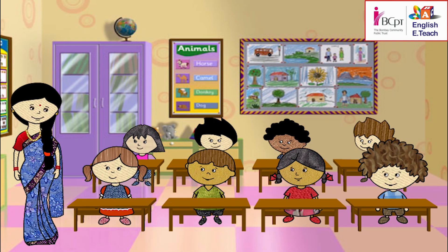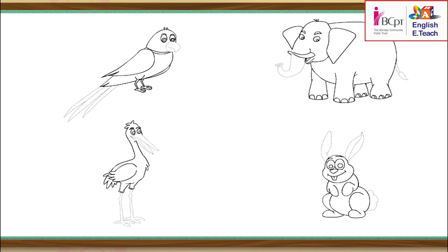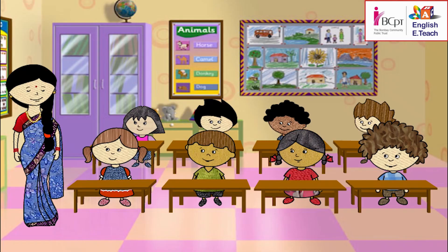Children, let's play a game. Look at these pictures. Say how each bird or animal looks. Others name it.